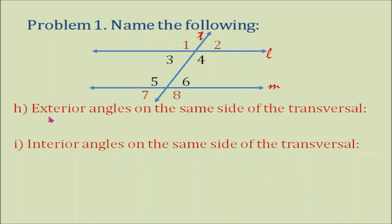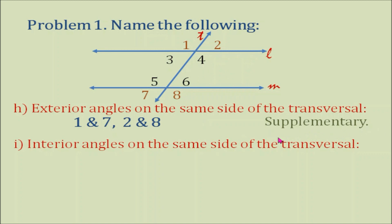How about exterior angles on the same side of the transversal? Our exterior angles are angles 1, 2, 7, and 8. The exterior angles on the same side of the transversal are angles 1 and 7, and angles 2 and 8. Let's remember that exterior angles on the same side of the transversal are supplementary.